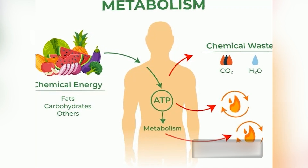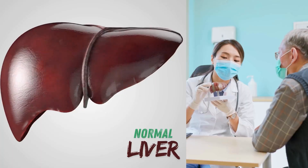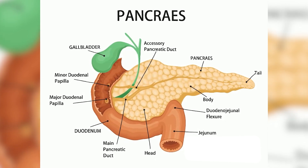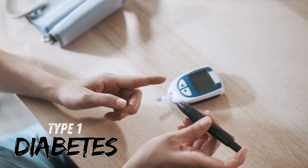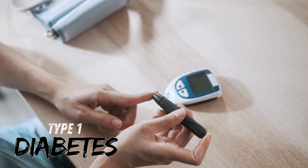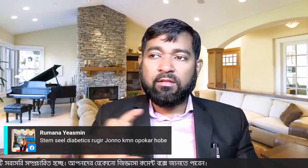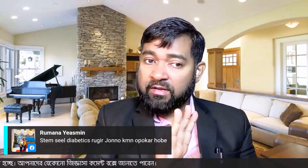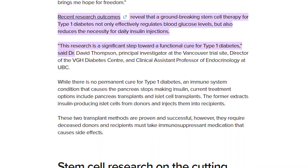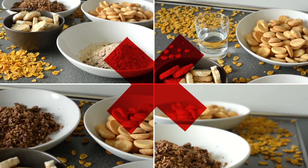We have to improve our immune system, and we have to improve our pancreas and beta cells. We have to improve type 1 and beta cells, our pancreas and insulin production.